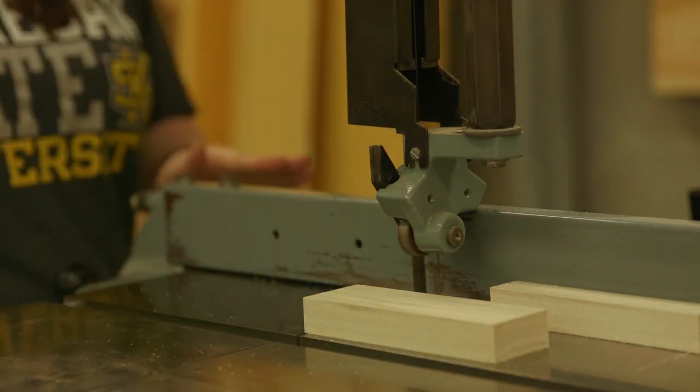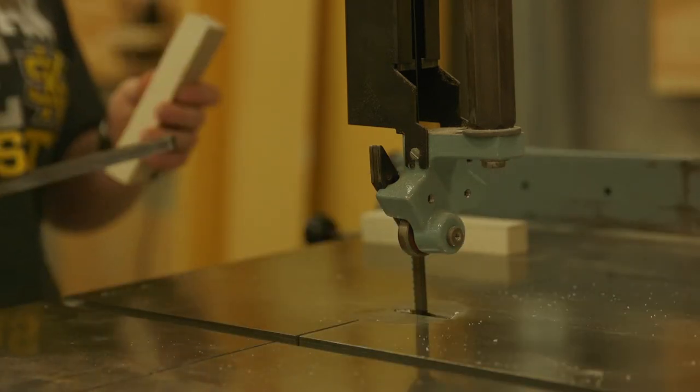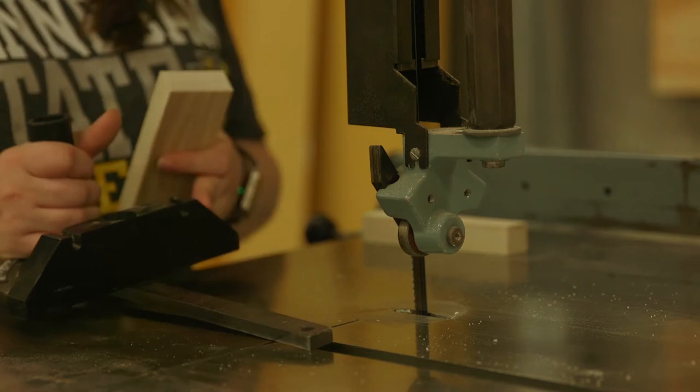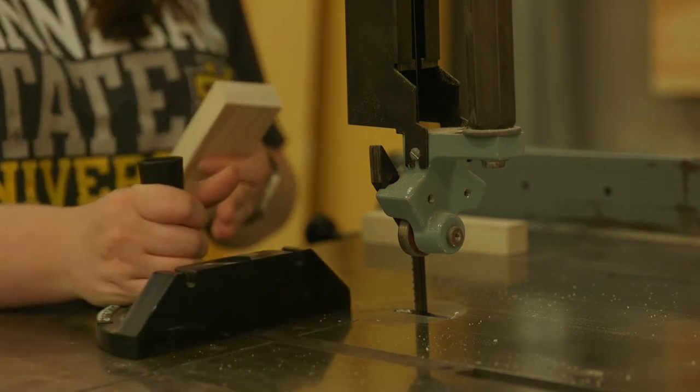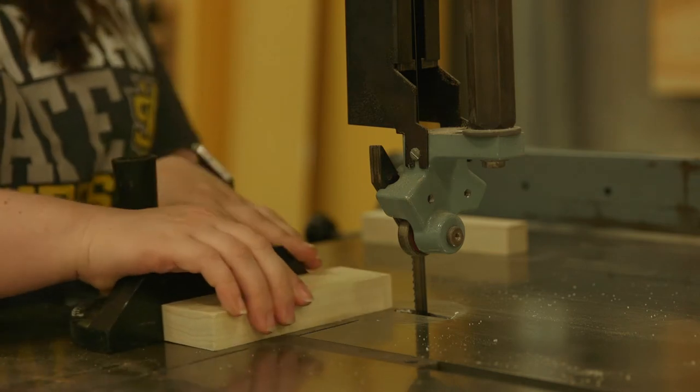Turn off the saw. In a similar manner for a cross cut, adjust the miter gauge as needed. Then the other steps are the same.